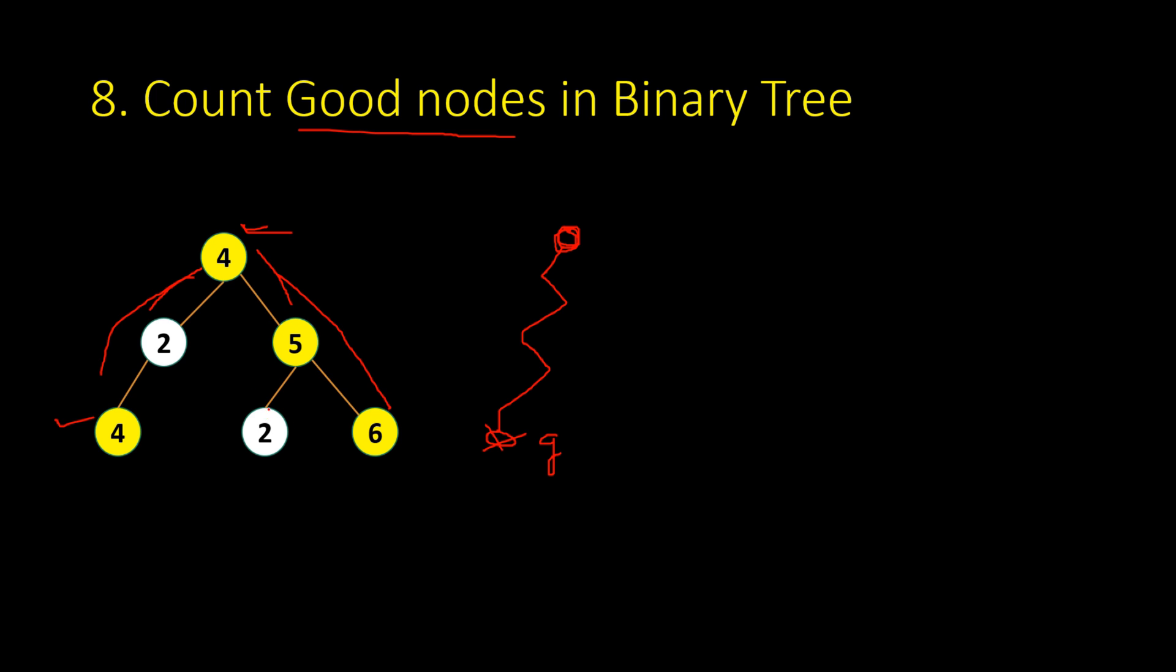Similarly, this 5 is a good node, 6 is also a good node, but this 2 is again not a good node because you take this path and 5 is larger than 2. So these 2 are not good nodes. The remaining 4 nodes are good nodes, so the answer should be 4.